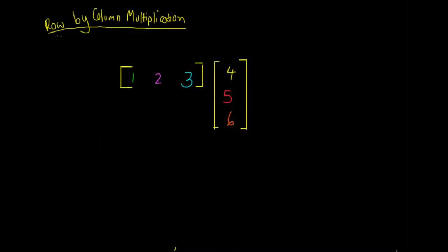Hey guys, so in this video we're going to have a look at the multiplication of a row matrix by a column matrix. This is super confusing the first time you see it, and I wouldn't be surprised if you don't pick it up the first time through. We're going to do a couple of examples to hopefully get it a little clearer, but it's a tricky concept and you can make some mistakes if you aren't paying that much attention. We're going to multiply these two matrices then do another example.